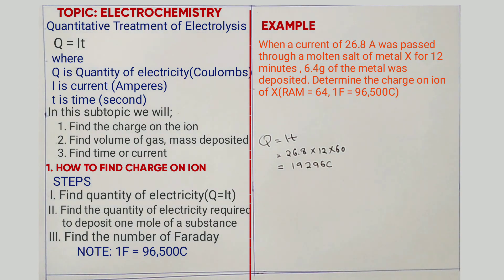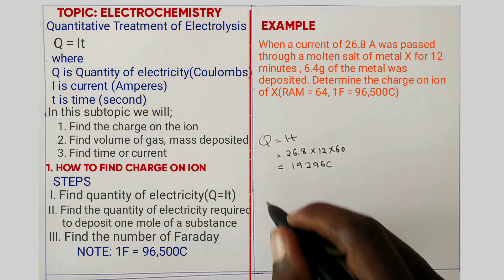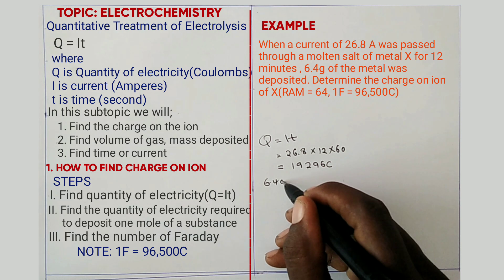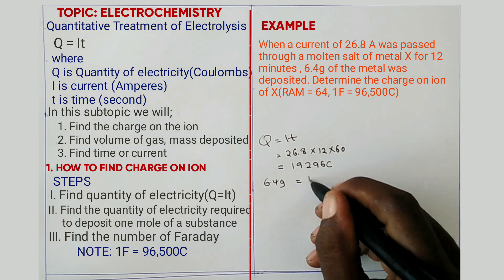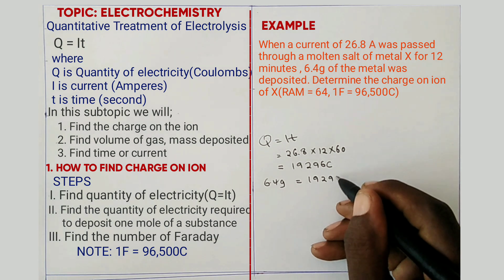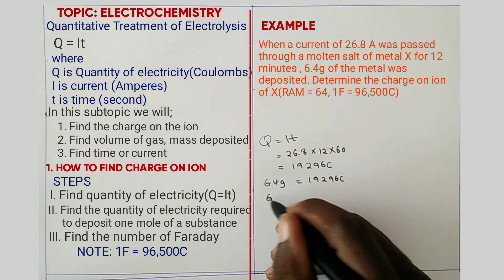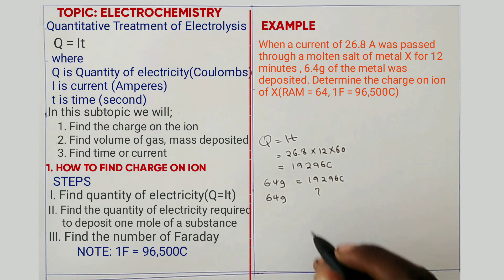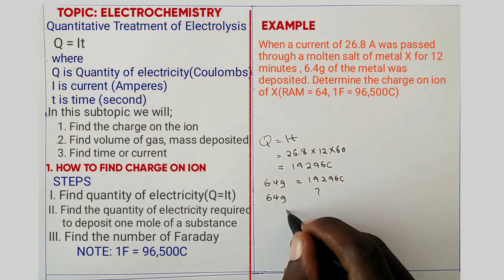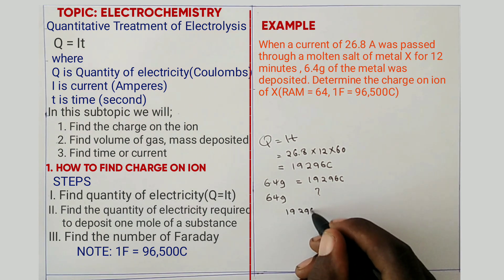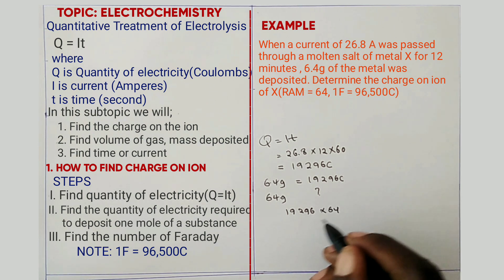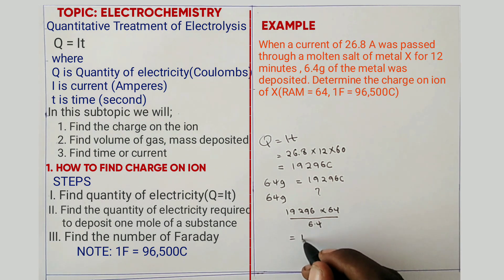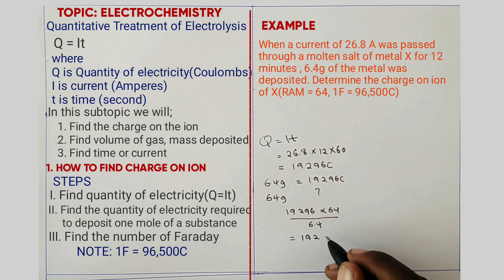Now in step two, you find the quantity for one mole. You take: 6.4 grams is equal to 19,296 C. What about the relative atomic mass of copper, which is 64 grams? If you multiply that, you get 19,296 times 64, divided by 6.4.